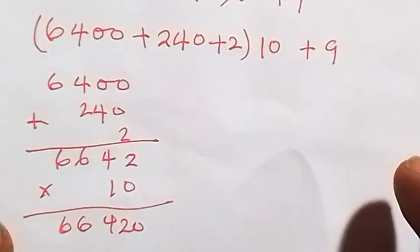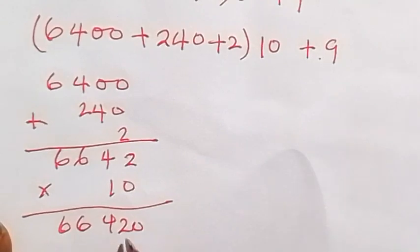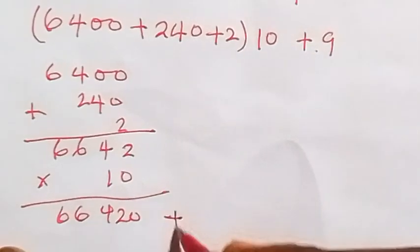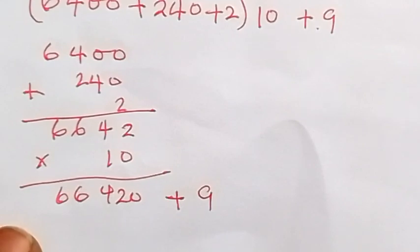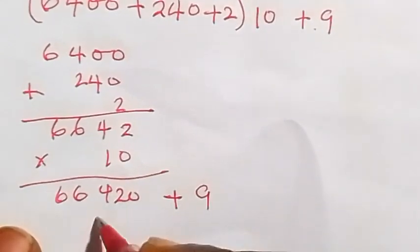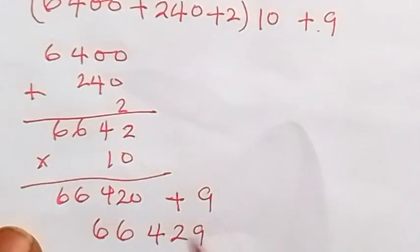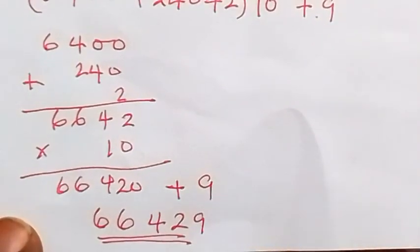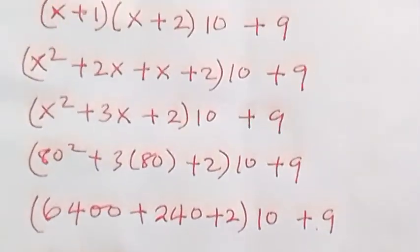Then we add 9 to this. So 66420 plus 9 gives us 66429. So we have 66429, and this is the final answer to this problem. Thank you for watching, please share this video, subscribe to my channel, and give it a thumbs up. See you next class, bye for now.